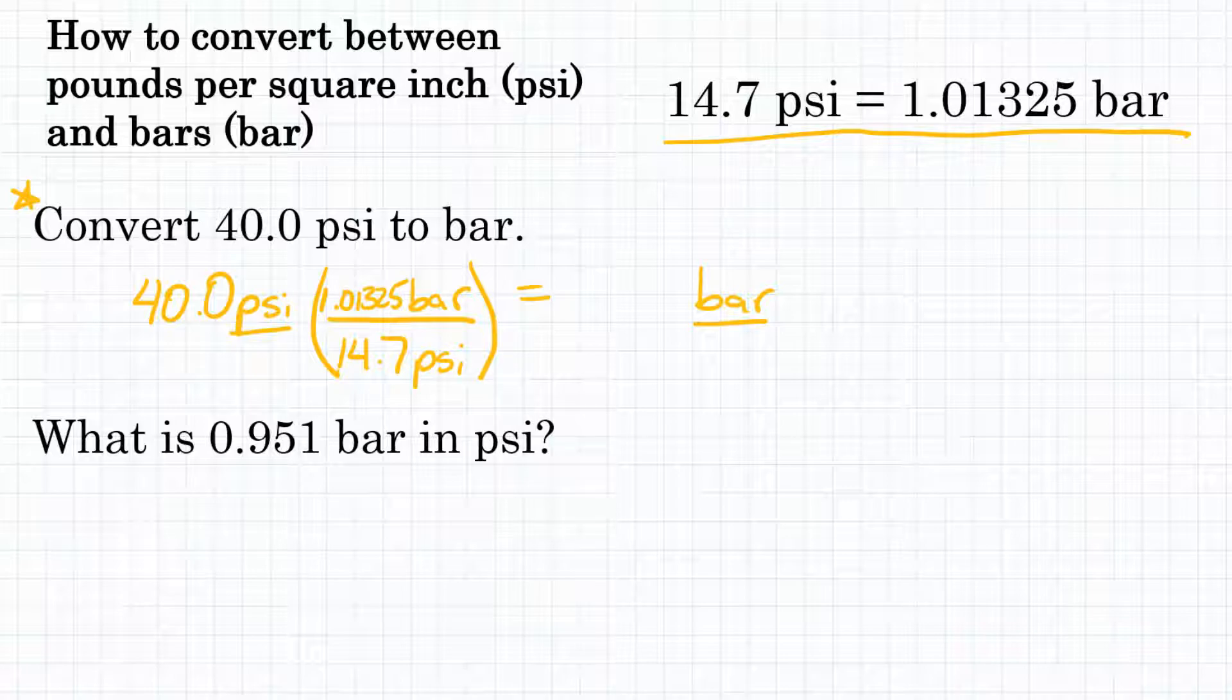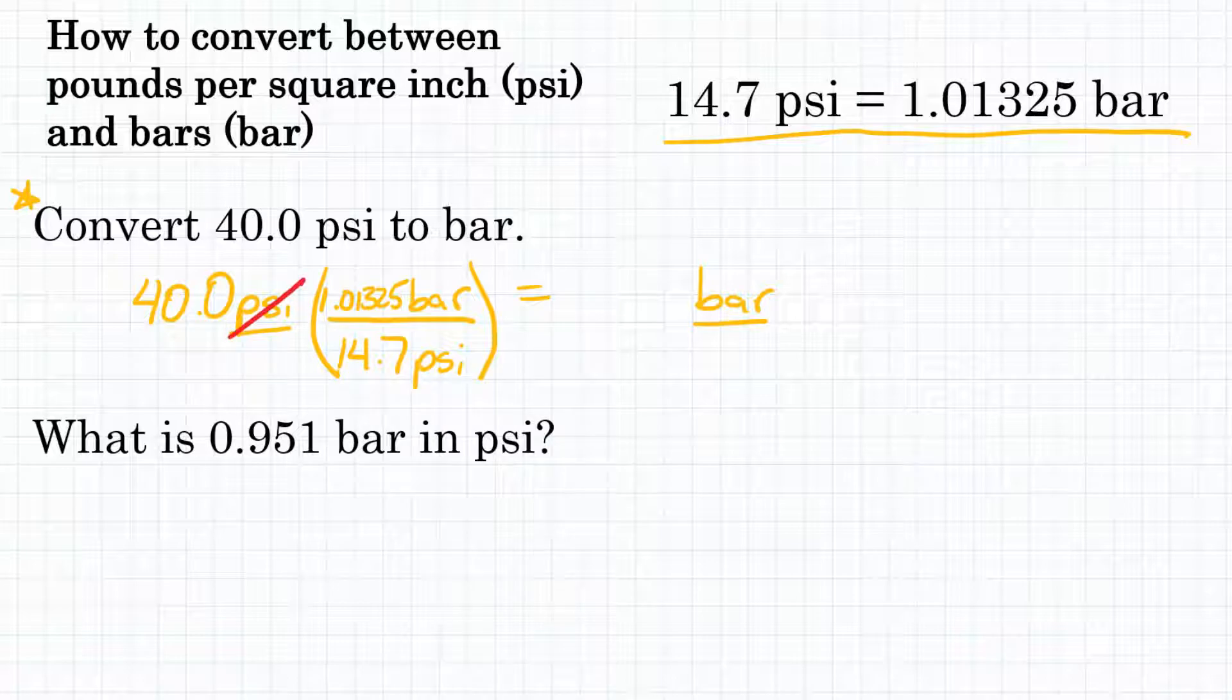Okay, so our problem is set up, let's look at our units. Since we're starting with PSI, and PSI is on the bottom of our conversion factor, that unit is going to cancel, because what's on top and on bottom cancels. And we will be left with just the unit of bar. All right, now we can plug this in our calculator.